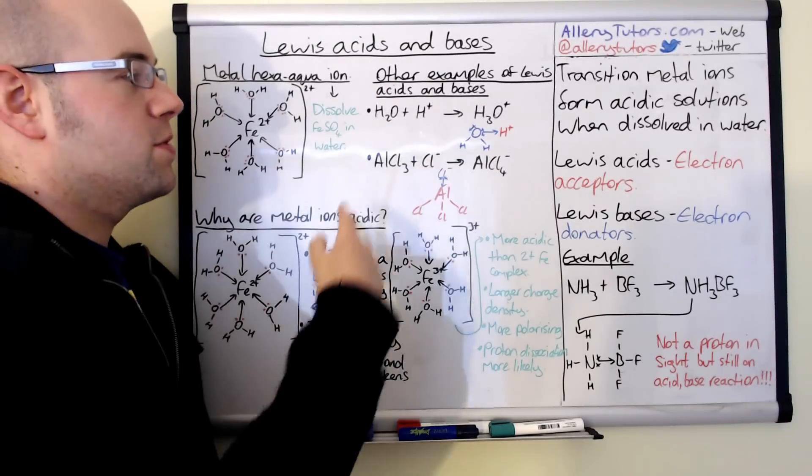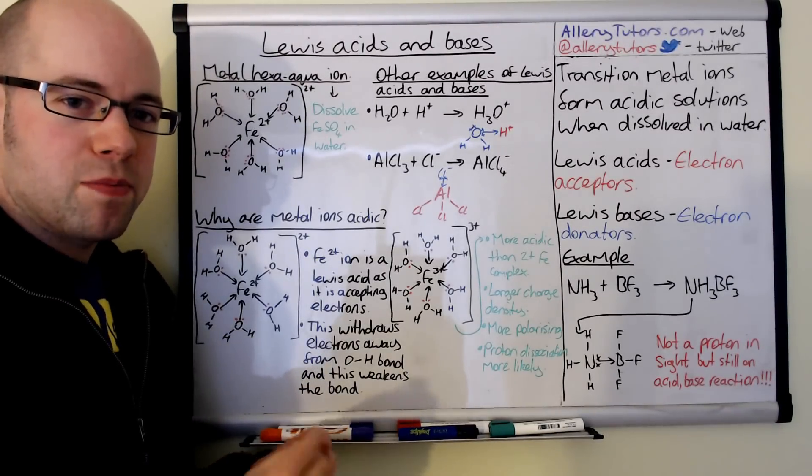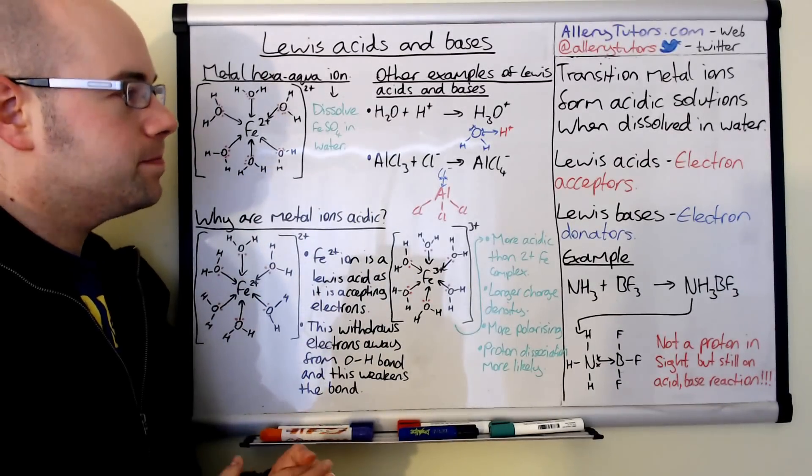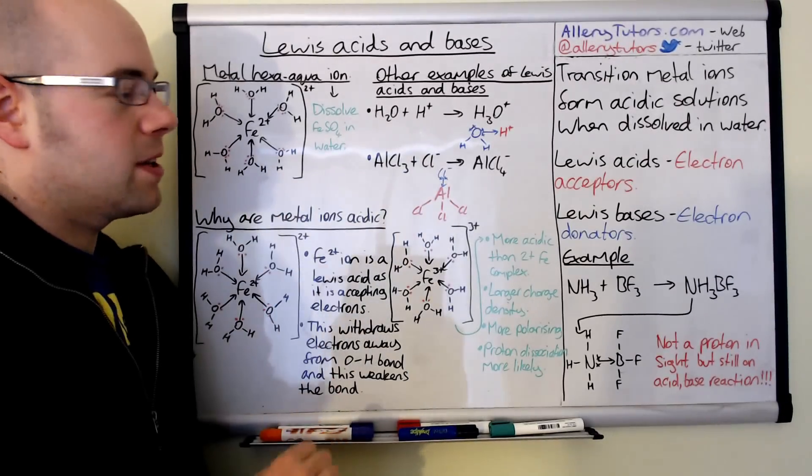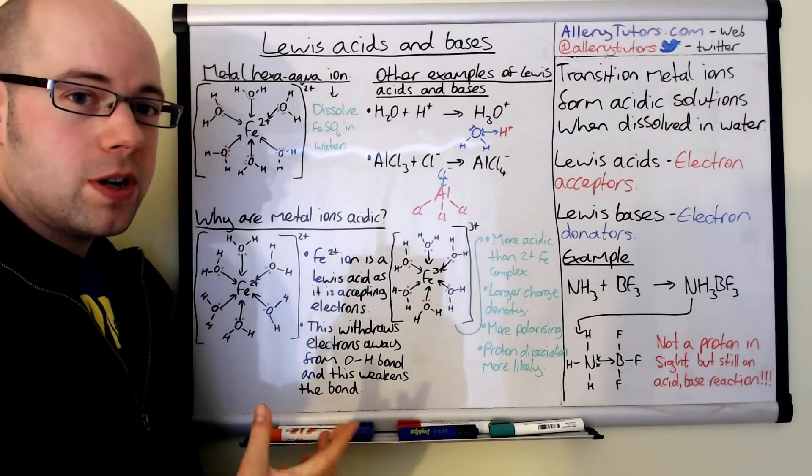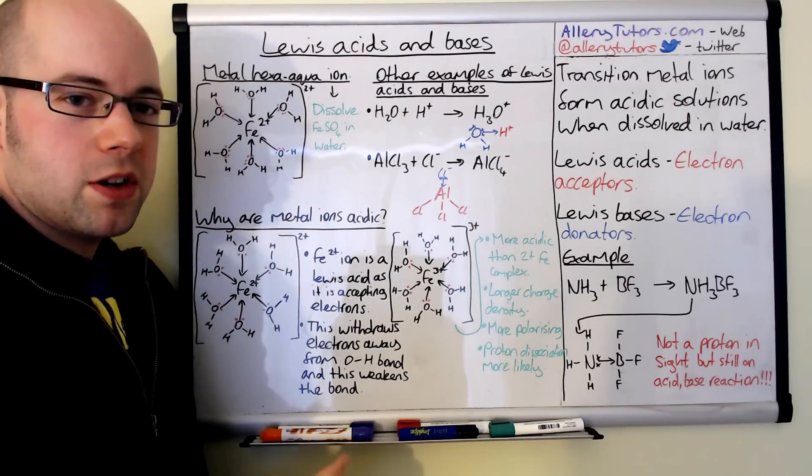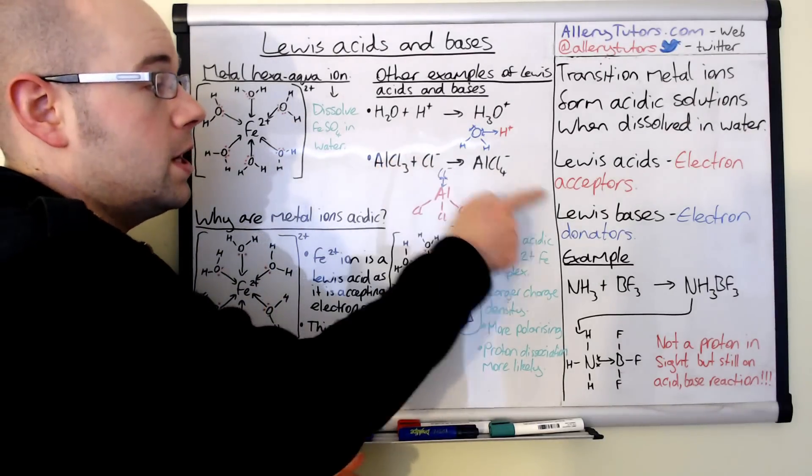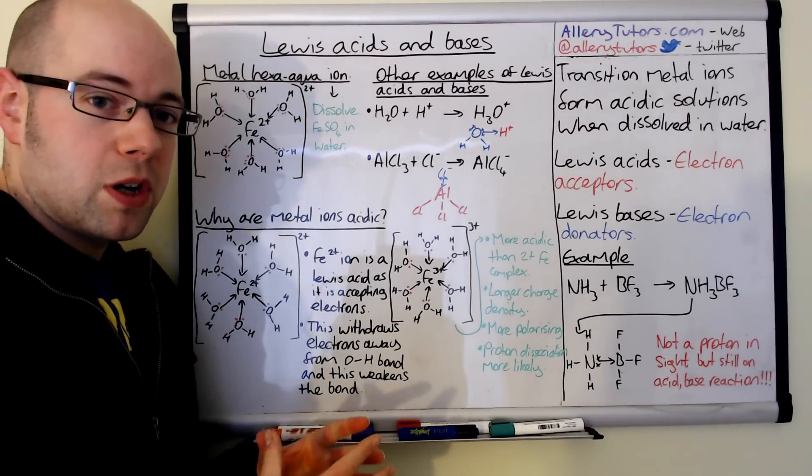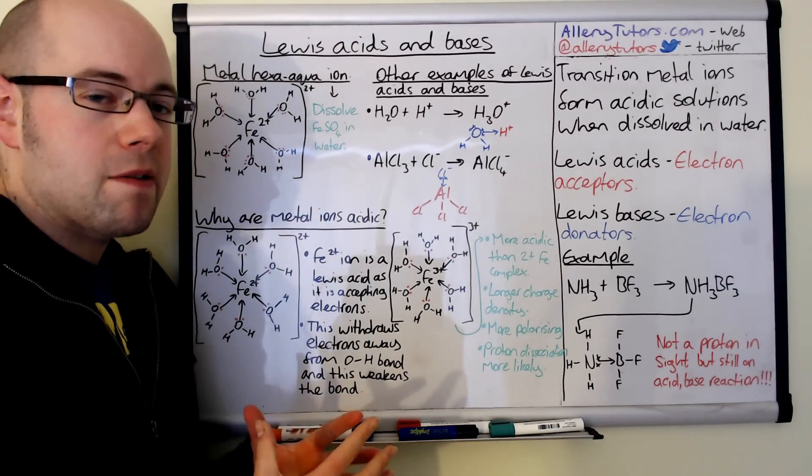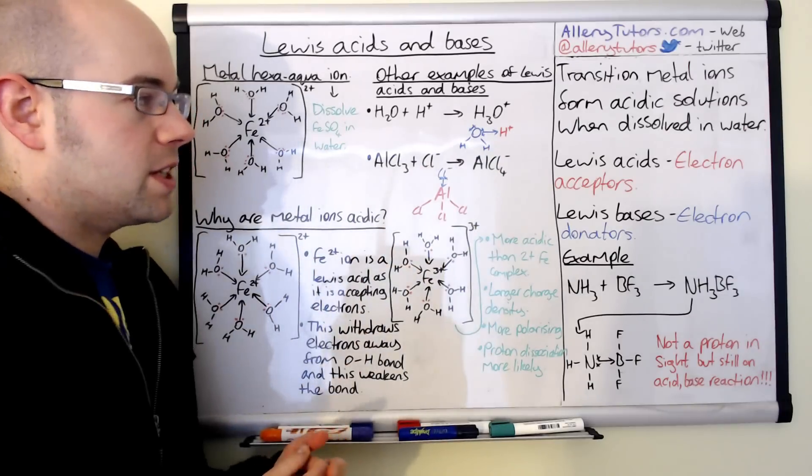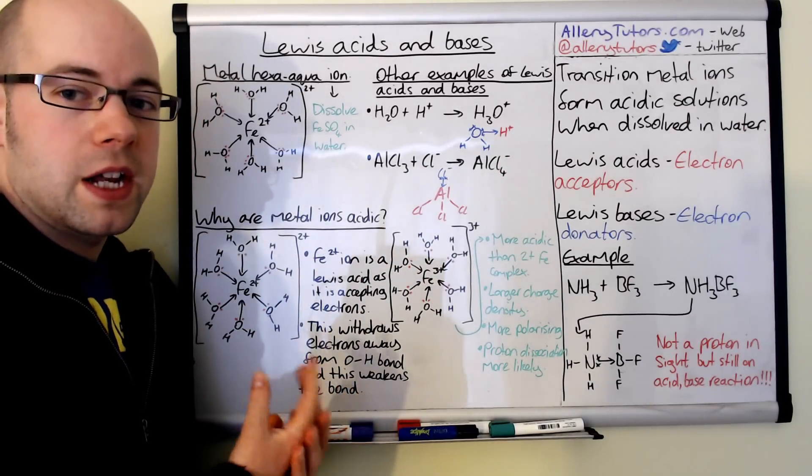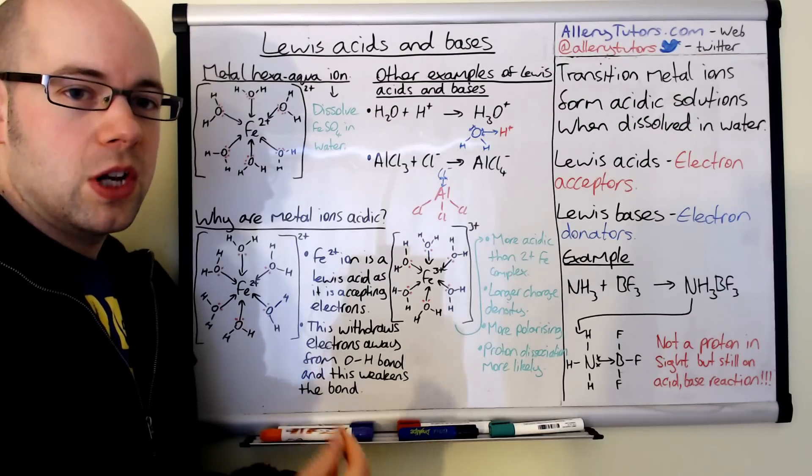I've got some more examples here where the Bronsted-Lowry proton theory doesn't explain, such as water accepting a proton. If you look at the molecule carefully, we've got a Lewis acid and Lewis base occurring. I've drawn the water molecule in blue, which tells us it's a Lewis base. The water molecule is donating a lone pair of electrons to a proton which is accepting them. This is a dative covalent bond and the proton is effectively an electron acceptor, which means it's a Lewis acid.